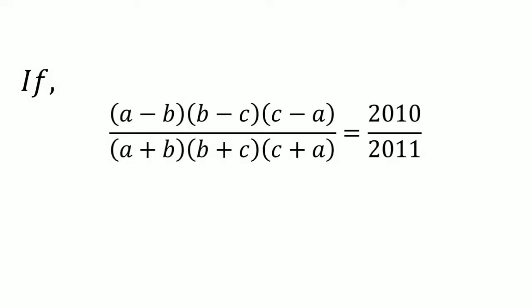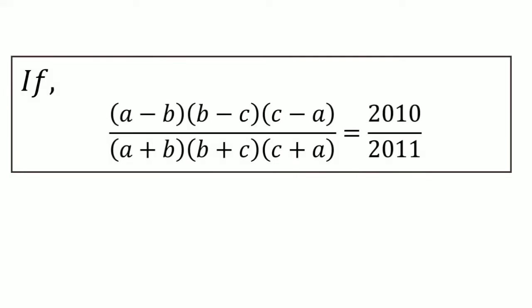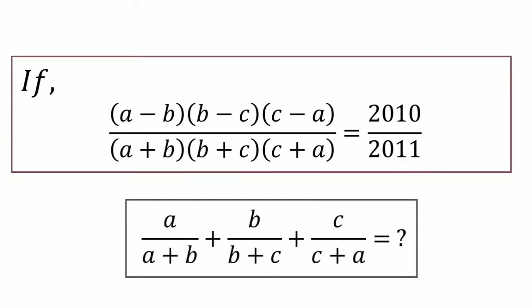Hi everybody. If (A minus B) times (B minus C) times (C minus A) divided by (A plus B) times (B plus C) times (C plus A) equals 2010 divided by 2011, then we need to find the value of A divided by (A plus B) plus B divided by (B plus C) plus C divided by (C plus A).